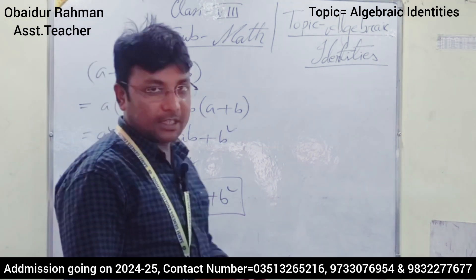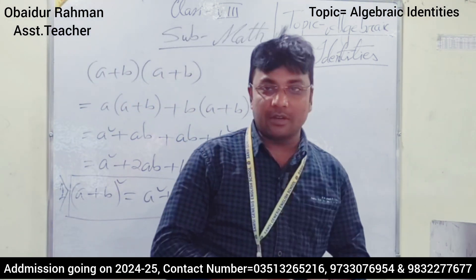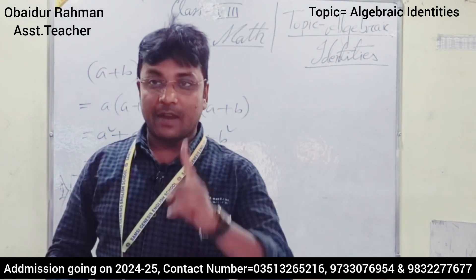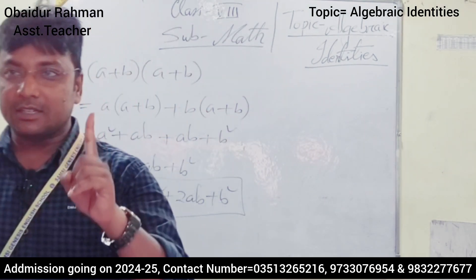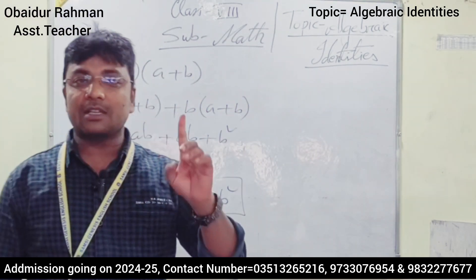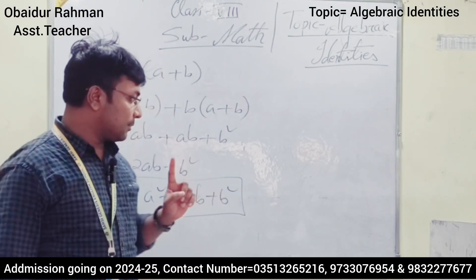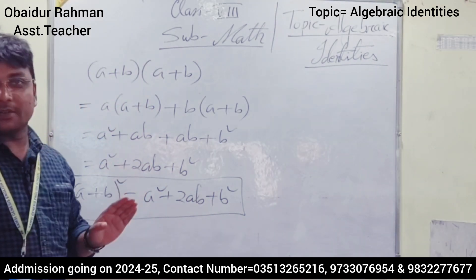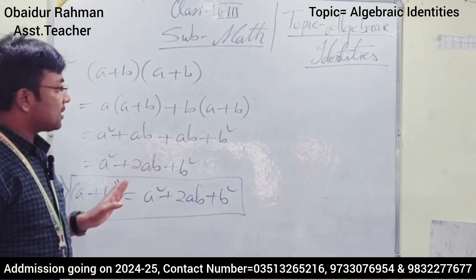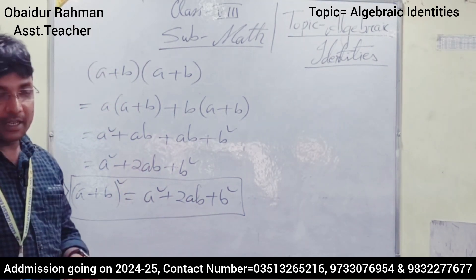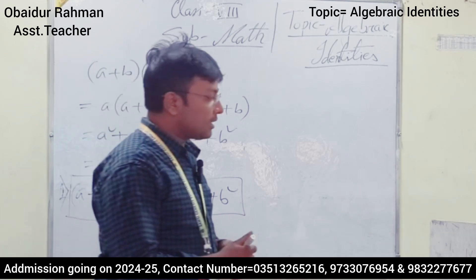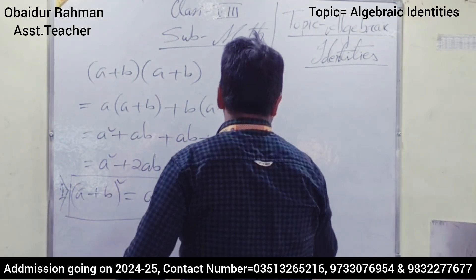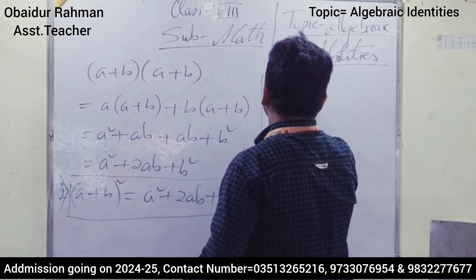This is the number one identity — the first identity and first law of algebra. So (a + b)² = a² + 2ab + b². Now, the second law: similarly, consider (a − b) into (a − b).